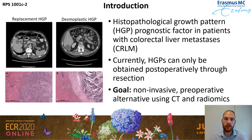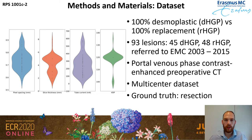Let's take a look at the dataset we're using. As a proof of concept, we've only included pure HGPs — 100% desmoplastic growth pattern against 100% replacement growth pattern. We included patients from our hospital and ended up with 93 lesions with a 50-50 split between these growth patterns. For all patients we have a portal venous phase contrast-enhanced preoperative CT, and these scans originated from different centers, which is why there's some variation in acquisition protocols, as you can see in the image on the left. For all lesions, the HGP was determined using pathology.